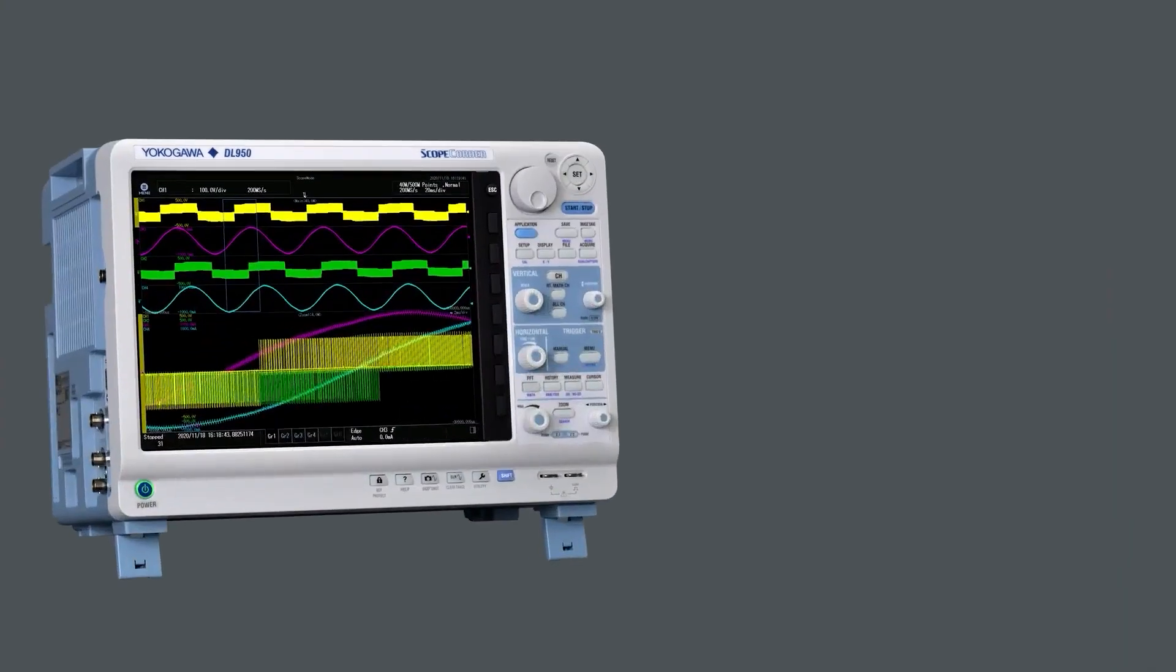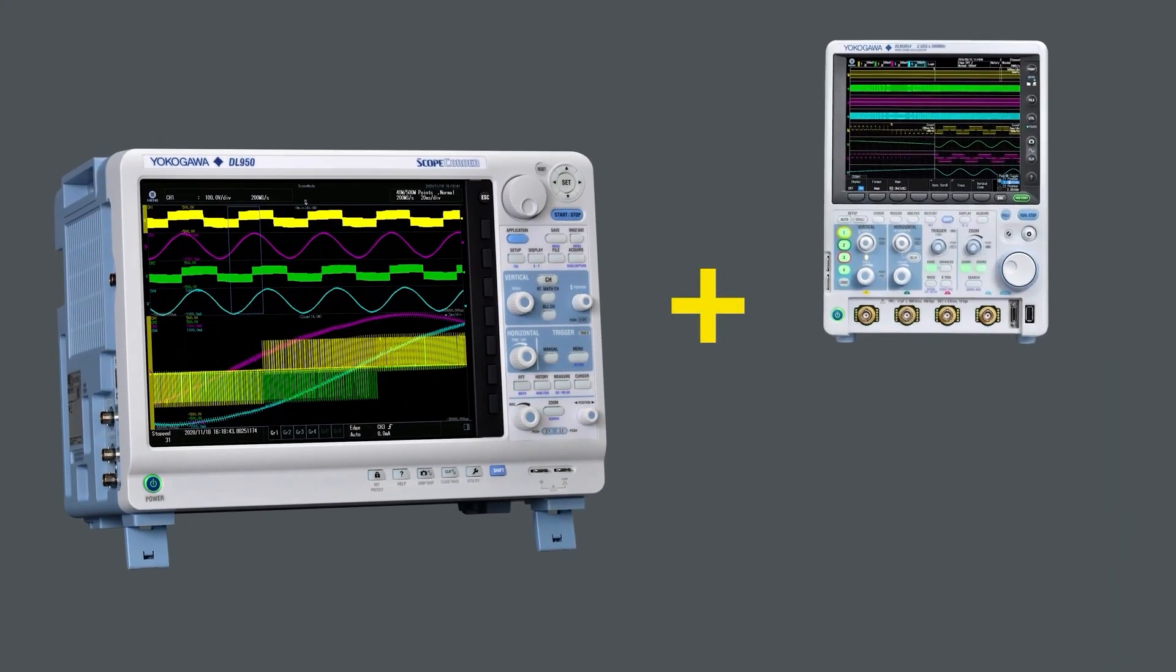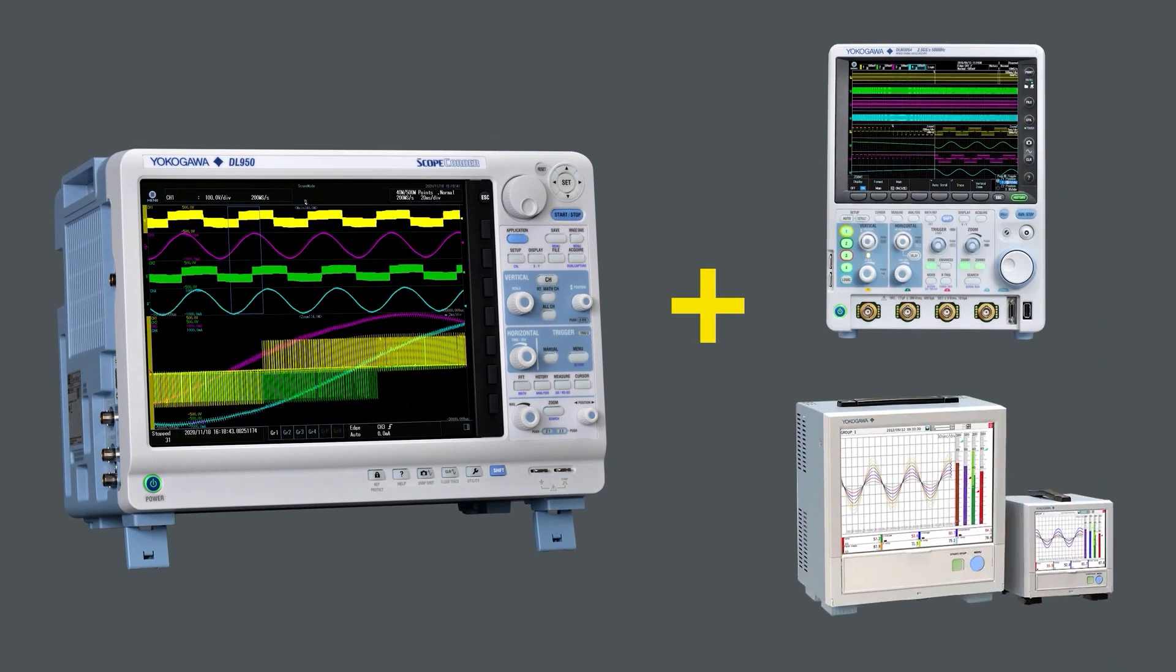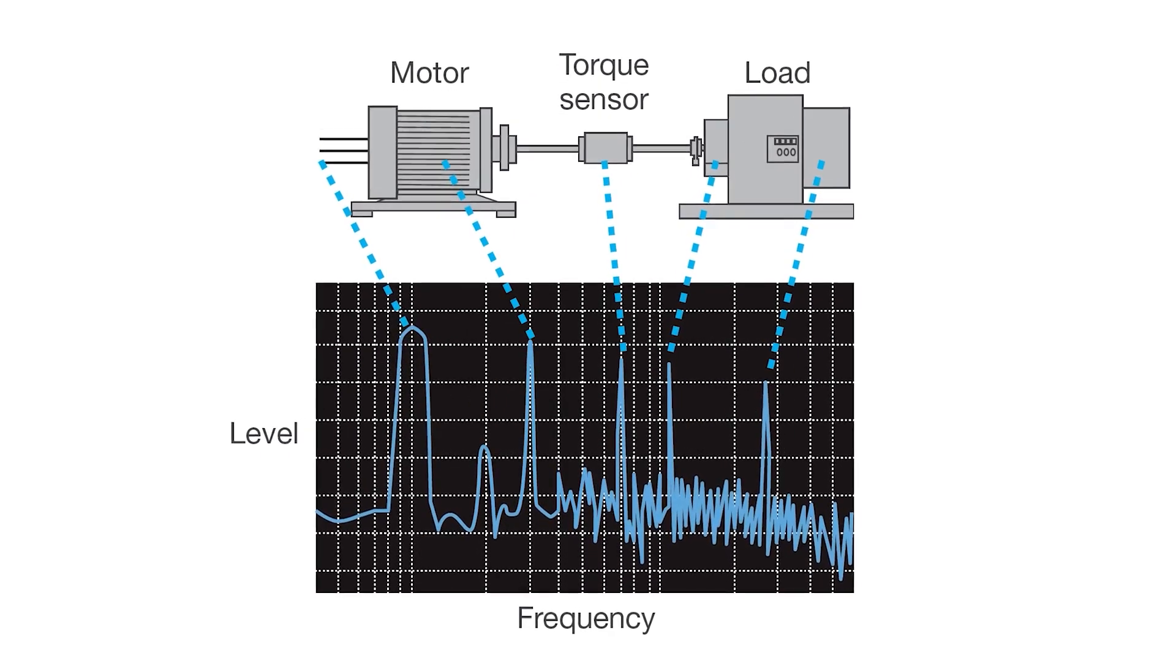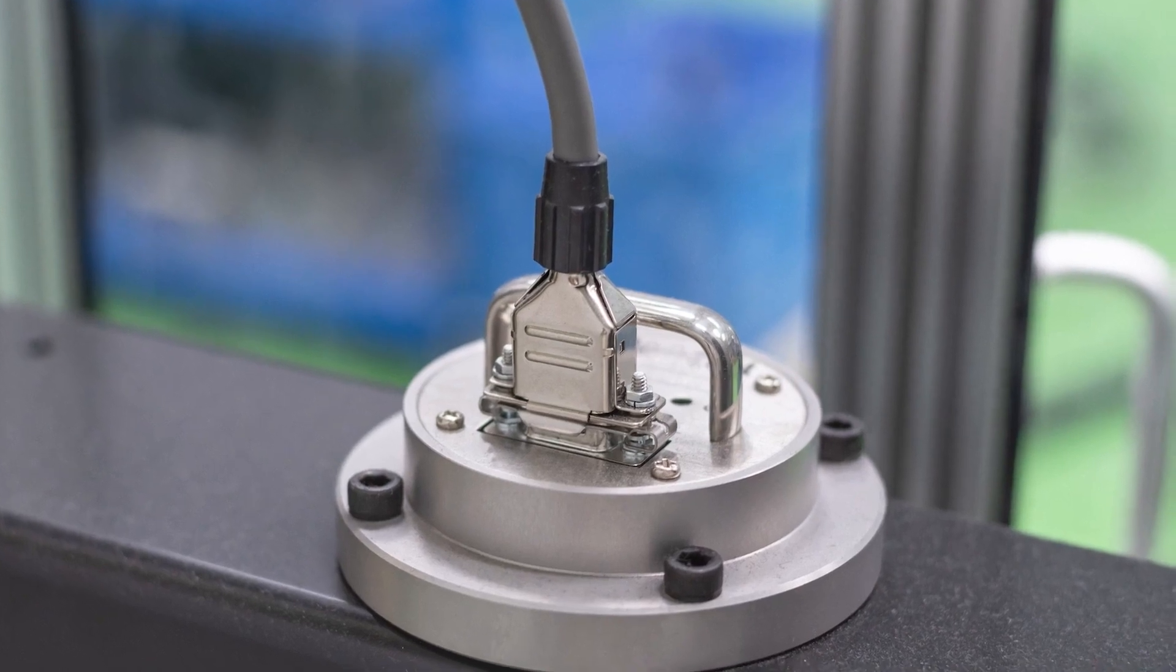The DL950 scope quarter is a hybrid instrument that combines an oscilloscope and portable data acquisition recorder that can be used to capture both high-speed transient events and long run trends. There are many cases where more channels may be needed such as battery cell evaluation, multi-point vibration analysis, and multi-point strain testing.